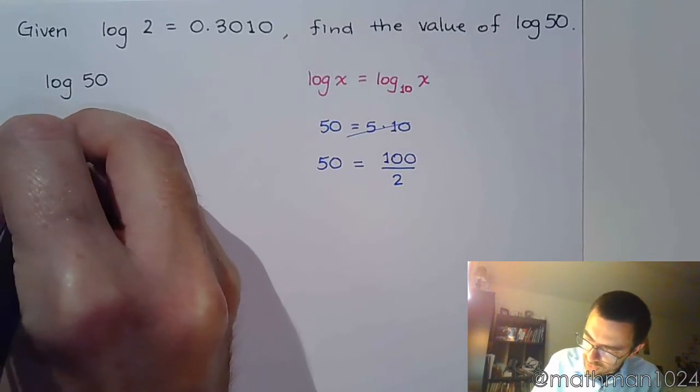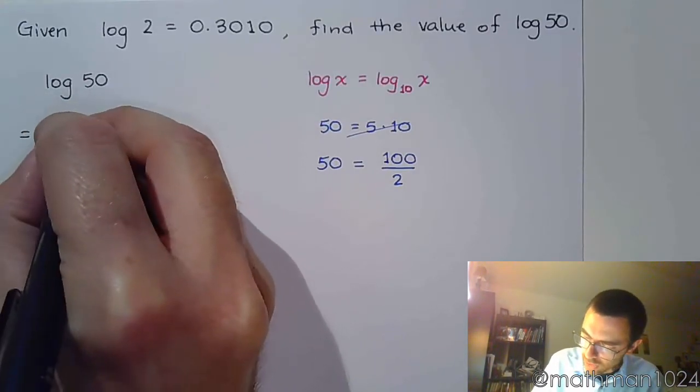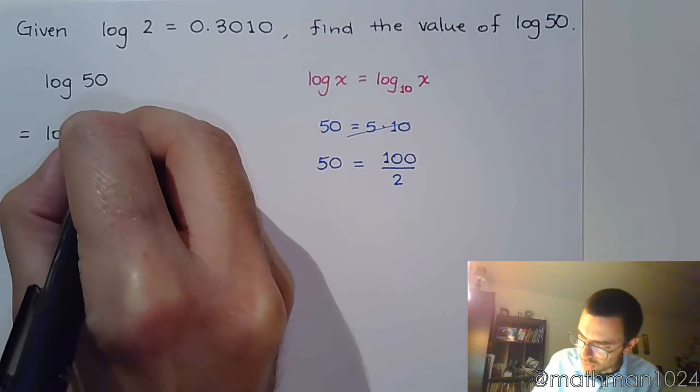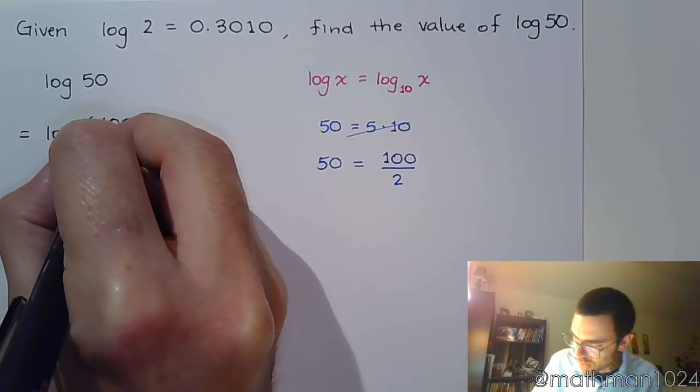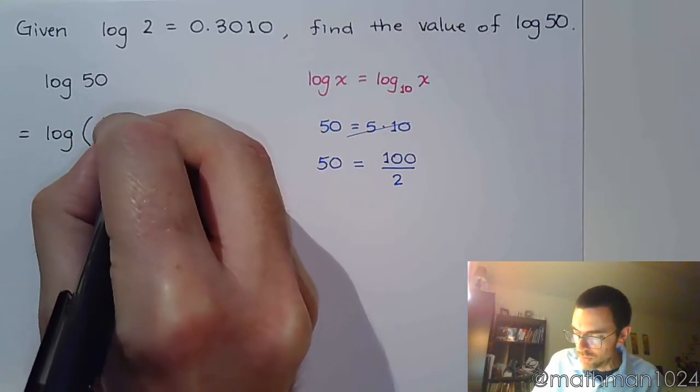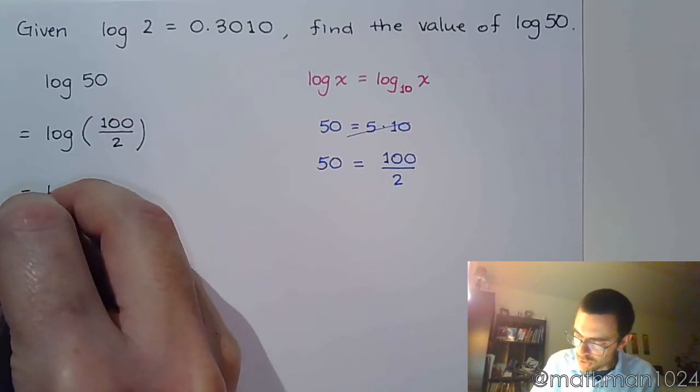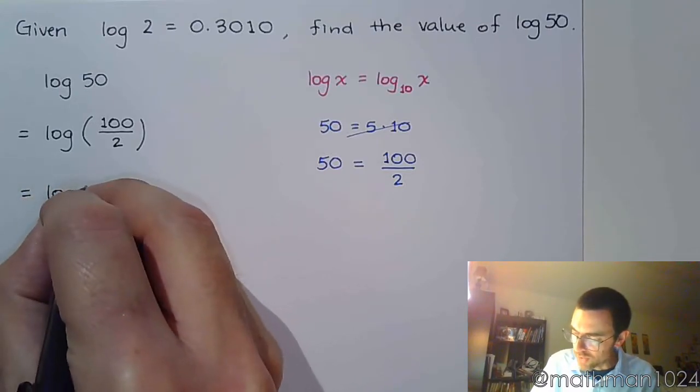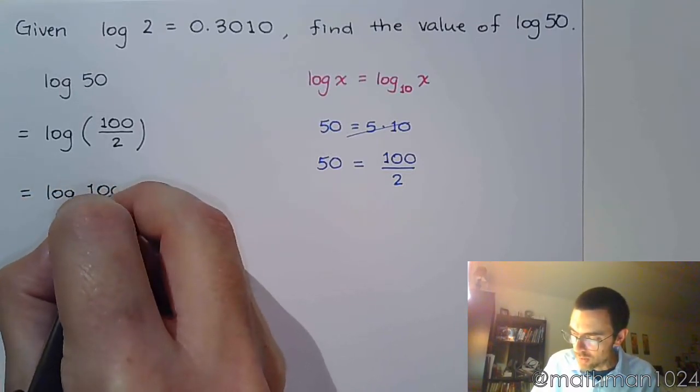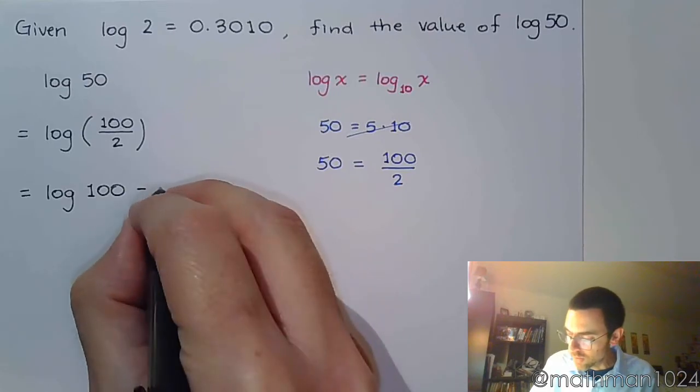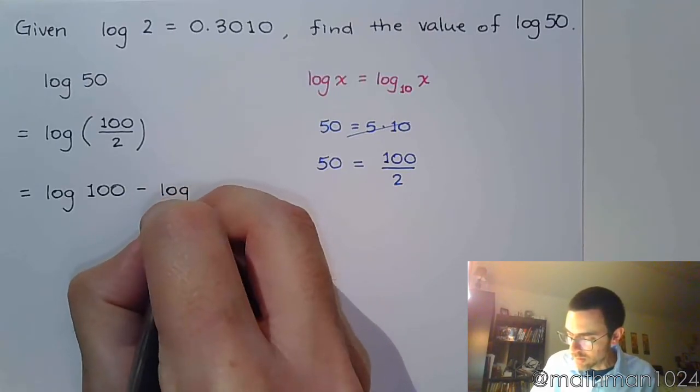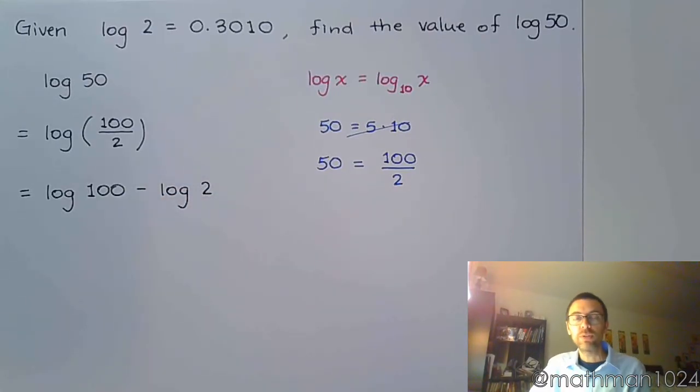So let's rewrite this to say log of 100 over 2, right? And so now, using those properties of logarithms, we can separate this.